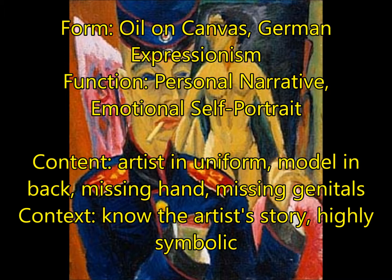For context, you can see Kirchner, the artist, in uniform and the model in the back. Notice that Kirchner is missing his hand, and the model is missing his genitals — both point to an emotional or psychological injury, because Kirchner never actually fought and never actually had a war injury. He also feels emasculated because of that model lacking their sexual organs. You need to know about Die Brücke, the group that he formed, which was short-lived. He's very representative of German life at the time, and his life kind of follows that path up to what Hitler did with famous artists like him.